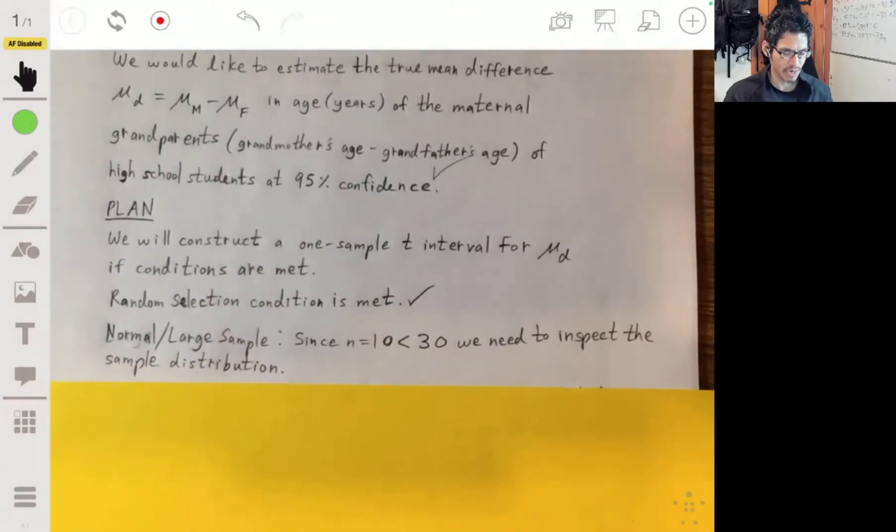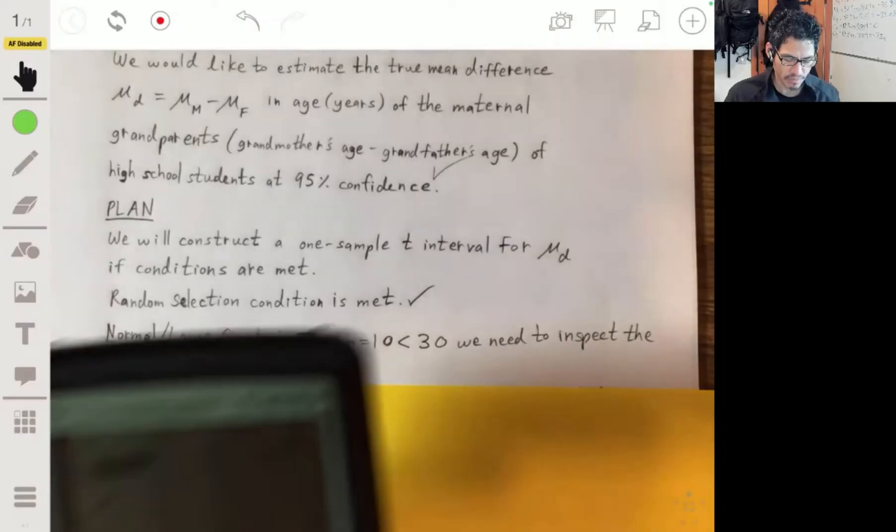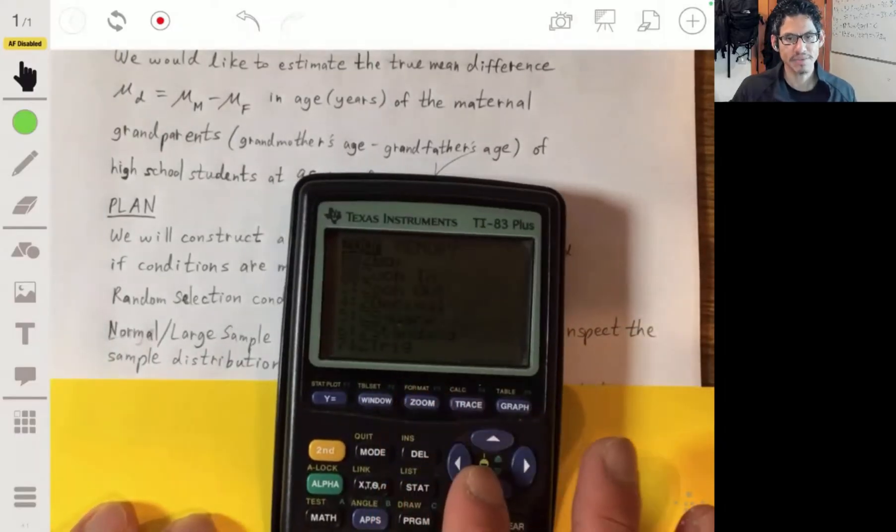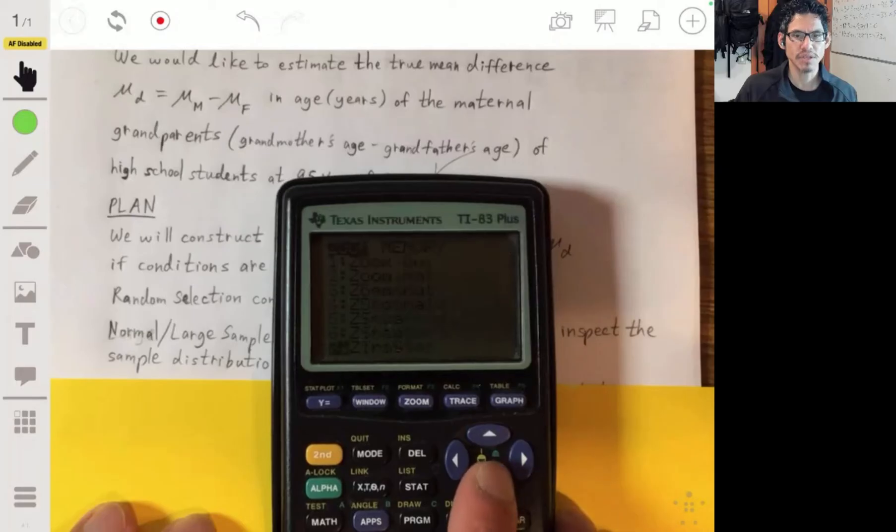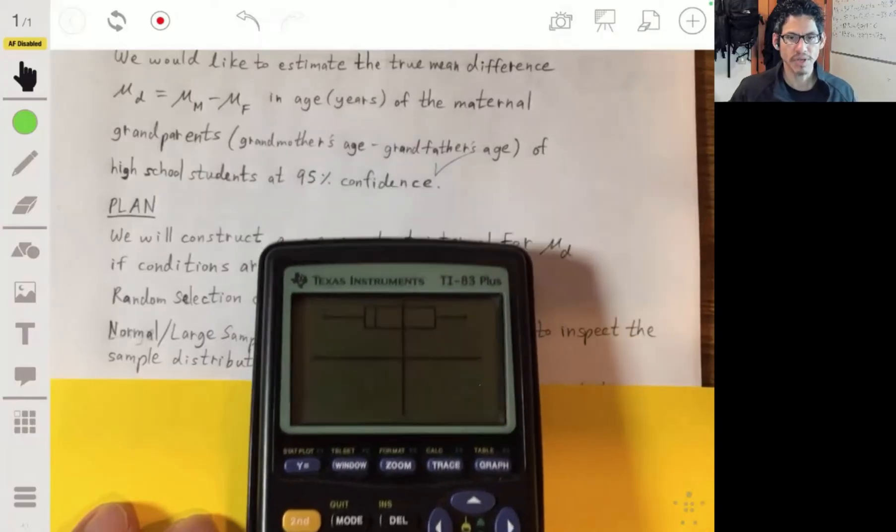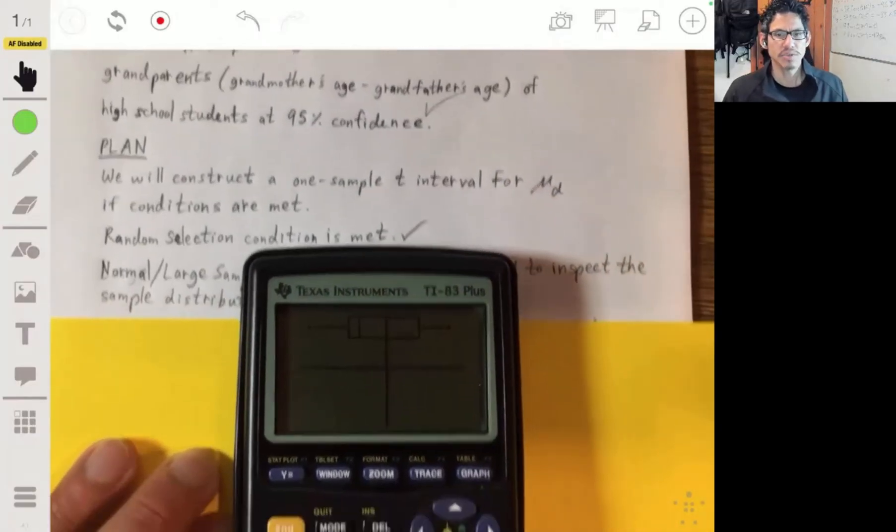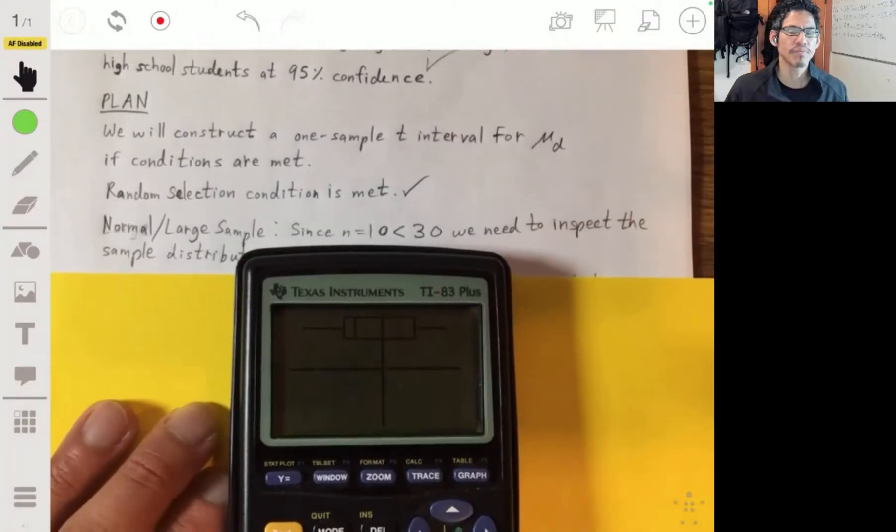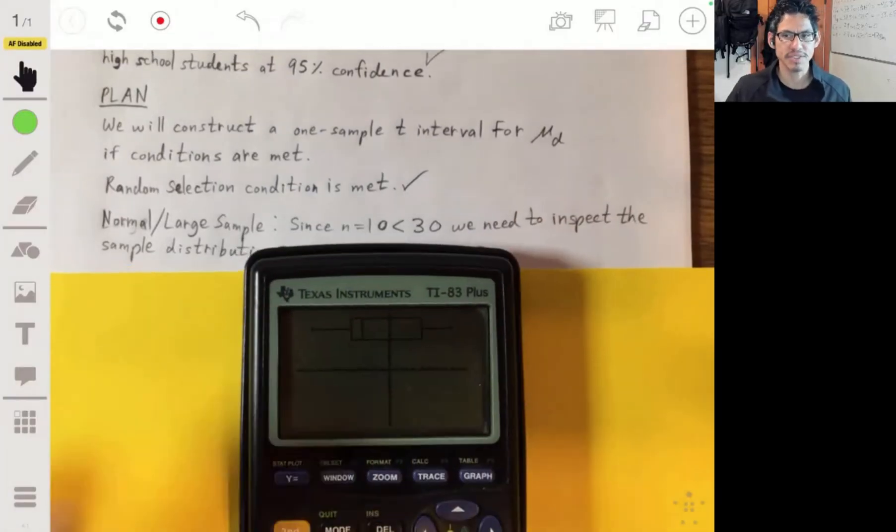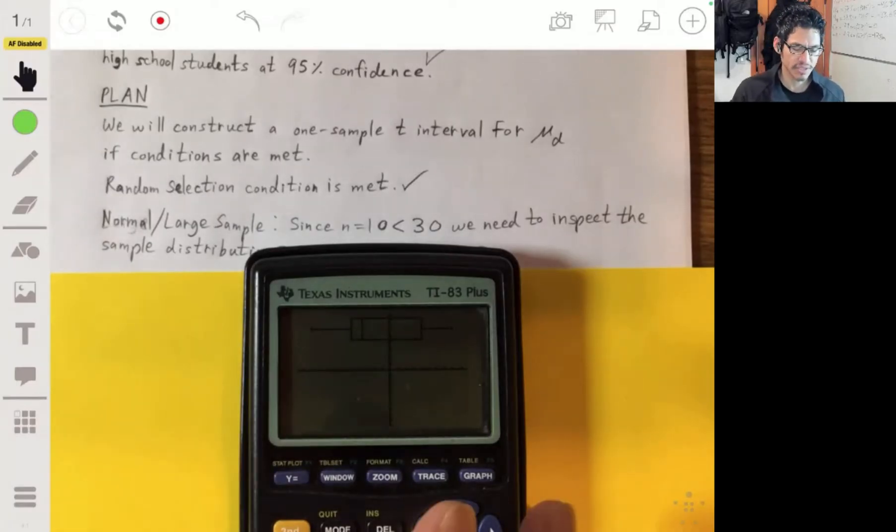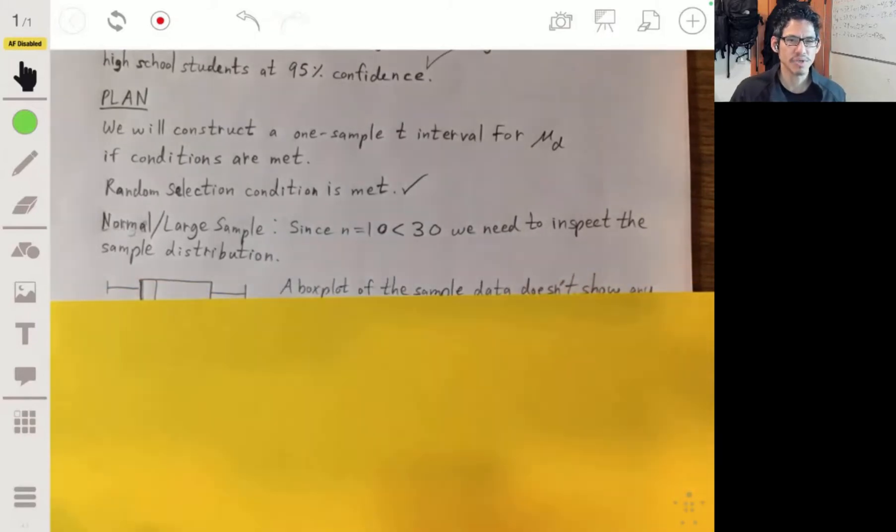So what I did, I put the data already into my calculator. And usually I like making a box plot, but you don't have to make a box plot. I think in the rubric there's a stem leaf plot. But here's the box plot of the data. So once you do that, you just have to draw a little sketch of it and make sure you mention that there's no strong skewness, there's no outliers. That means that it's okay to move on, that this condition is met. We don't have reason to believe that the data is not going to be normal.